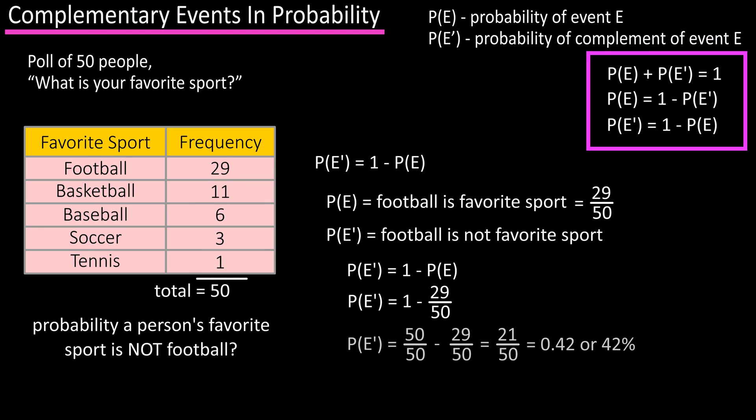Doing some math, we get 50 over 50 minus 29 over 50, which equals 21 over 50, which equals 0.42, or a 42 percent probability of selecting someone whose favorite sport is not football.